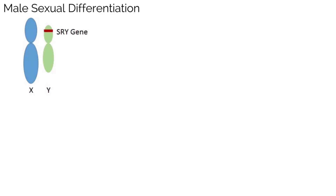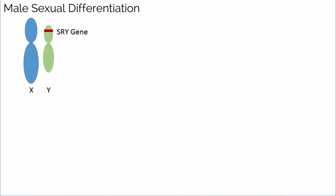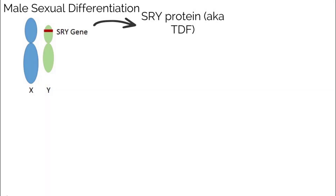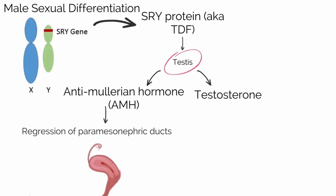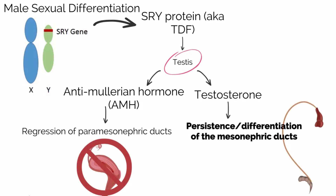Let's take a closer look at how sexual differentiation occurs. On the short arm of the Y chromosome lies the SRY gene, located in the sex-determining region of the Y chromosome. The SRY gene encodes for SRY protein, previously known as testes-determining factor, or TDF. The SRY protein leads to gonadal differentiation of the testes and produces anti-Müllerian hormone and testosterone. Anti-Müllerian hormone causes regression of the paramesonephric ducts, and testosterone drives the persistence and differentiation of the mesonephric ducts.